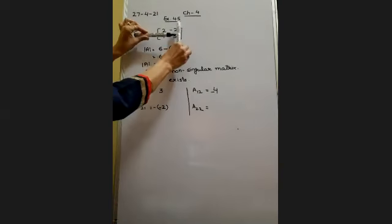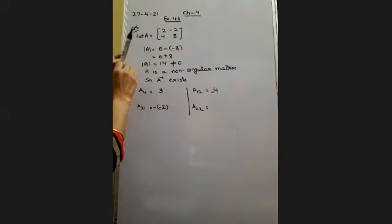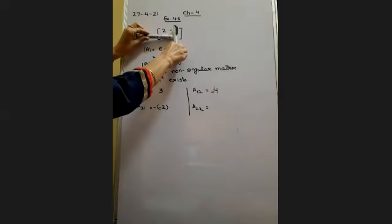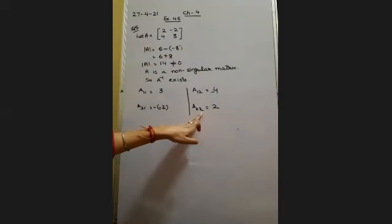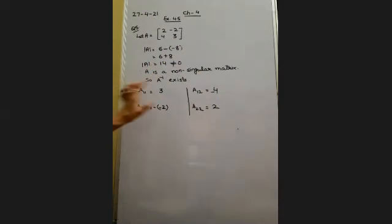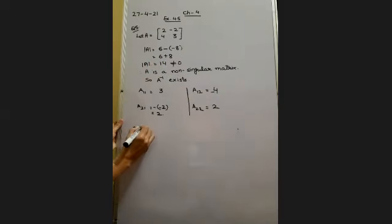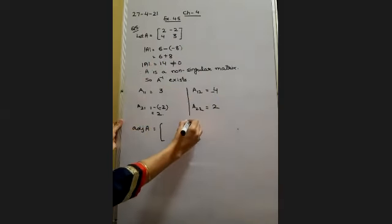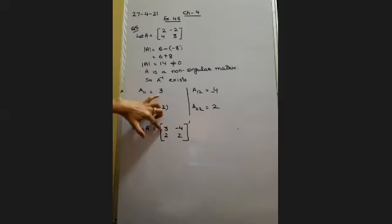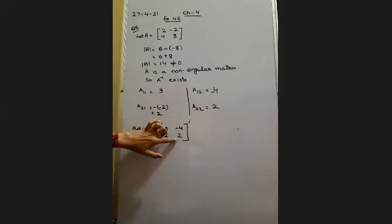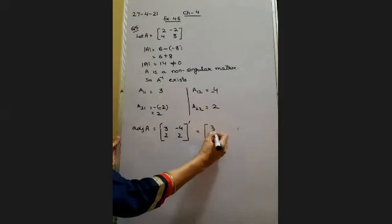A22: delete second row and second column, we are left with 2. Sum of row and column is even, so no change in sign. So our cofactors are: A11 = 3, A12 = minus 4 (sign changed), A21 = 2 (sign changed), A22 = 2. Writing these at their respective positions gives us the cofactor matrix: [3, −4; 2, 2].